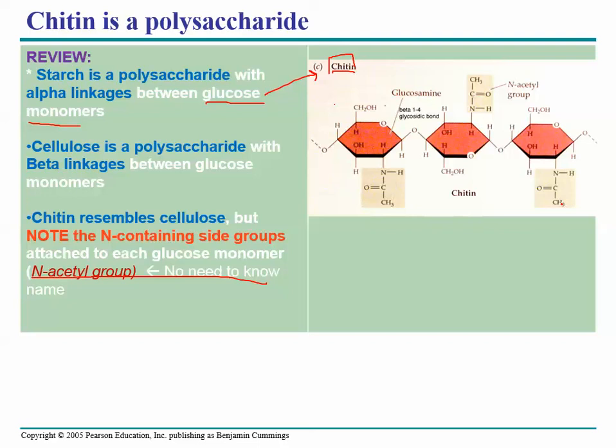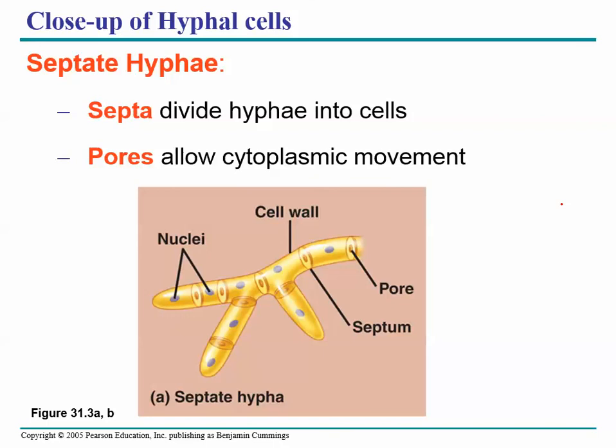Some hyphae are what we call septate hyphae — the septa are cell walls that divide the hyphae into cells. But the cell walls in the fungus have an opening called a pore, and that pore allows the cytoplasm to flow from cell to cell.